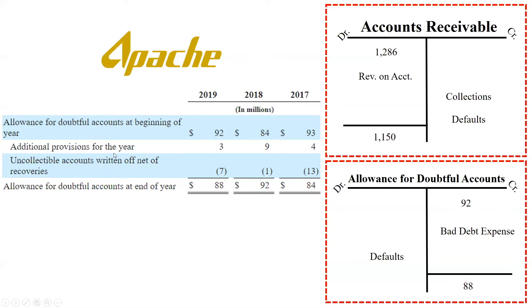From that table: 'additional provisions for the year' is another term for bad debt expense — the 3 million represents a debit to bad debt expense and a credit to the allowance account. We move that 3 into the allowance t-account. The minus 7 represents actual customer defaults using the allowance — a debit to the allowance for doubtful accounts. As a check: 92 plus 3 minus 7 equals 88, which reconciles the beginning balance to the ending balance.